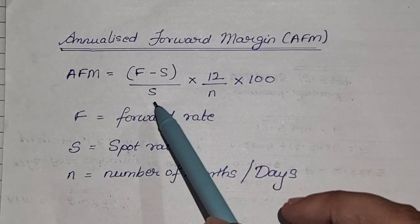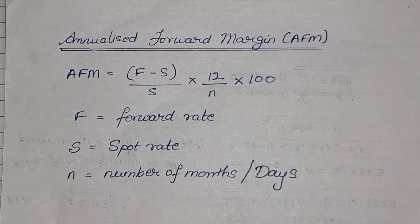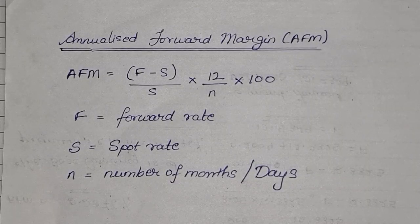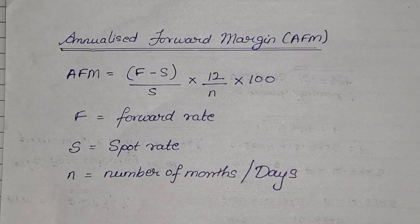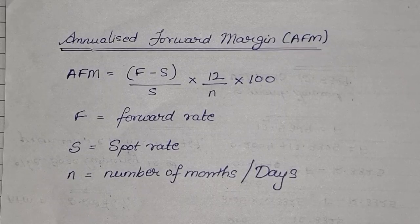After solving, if you get the answer as positive, it means the base currency is at premium. If you get the answer as negative, you conclude that the base currency is at discount. So basically we are trying to find whether the annualized forward margin gives you a premium or a discount — that is what we are finding with this formula.